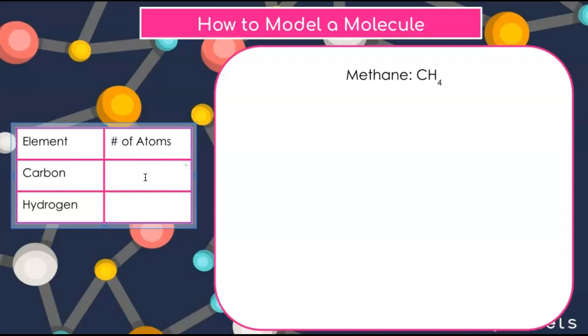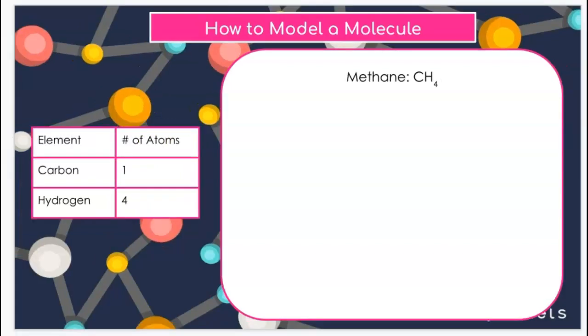I can see that for carbon, using my reading chemical formula rules, I have a single atom, and for hydrogen we have four. Now that we've identified the type and number of atoms that are present in this methane molecule, we're ready to create our model.